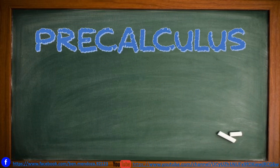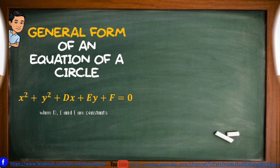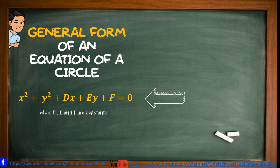Welcome to our new topic in Precalculus. We are still in Lesson 1.1, but this time we're going to study the equation of a circle in general form. The general form is x squared plus y squared plus dx plus ey plus f is equal to 0, where d, e, and f are constants.